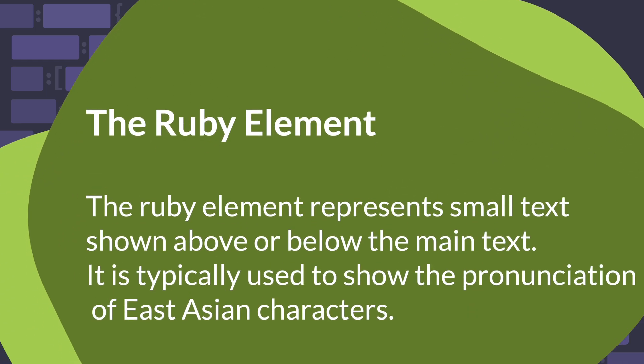The Ruby element represents small text shown above or below the main text. It is typically used to show the pronunciation of East Asian characters.